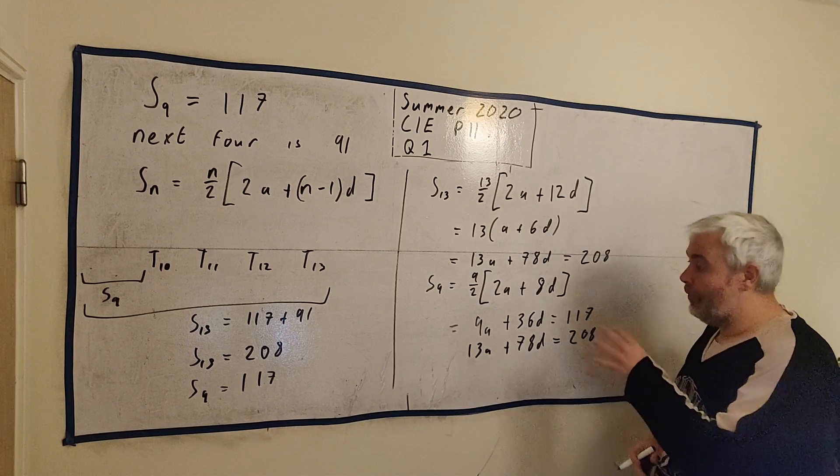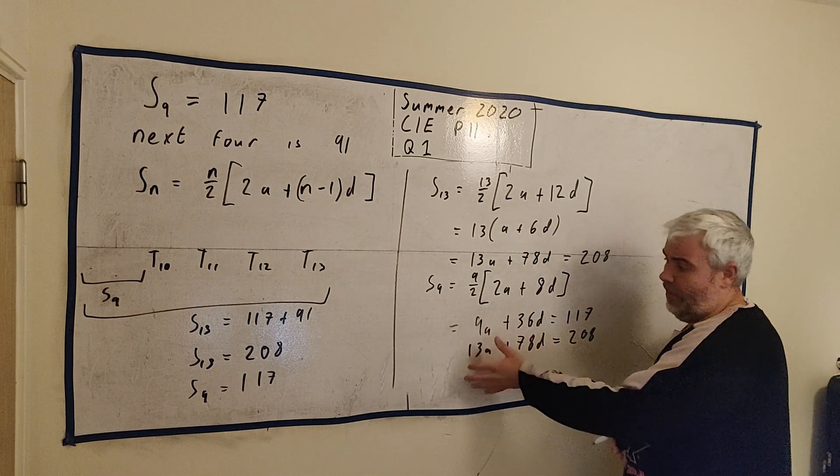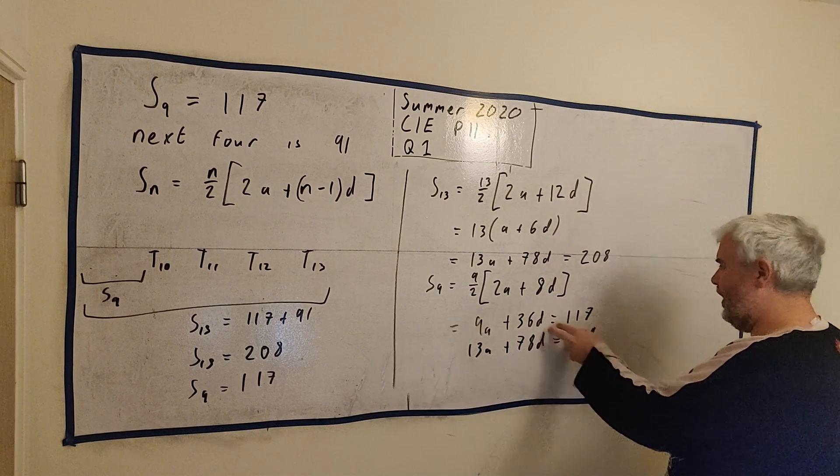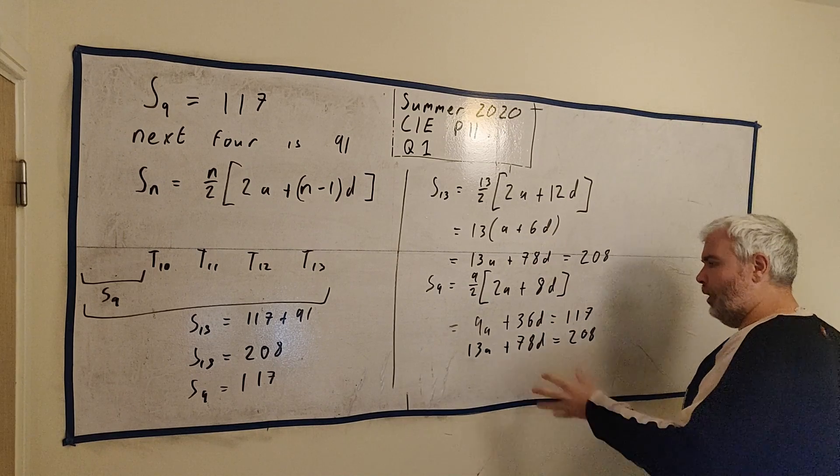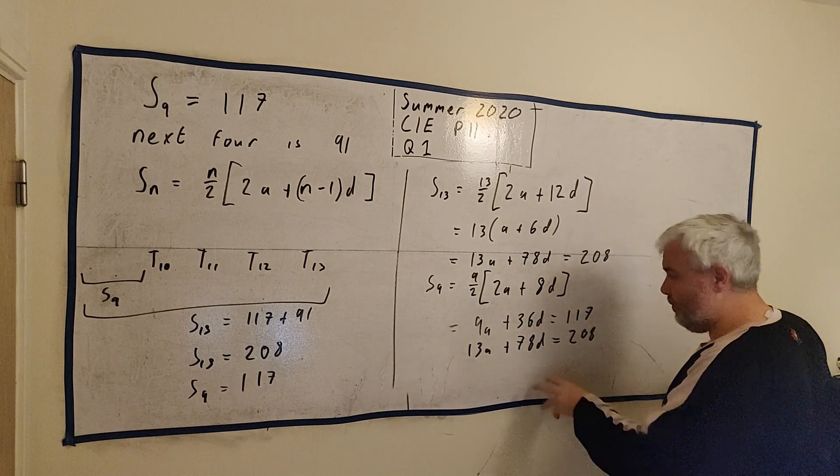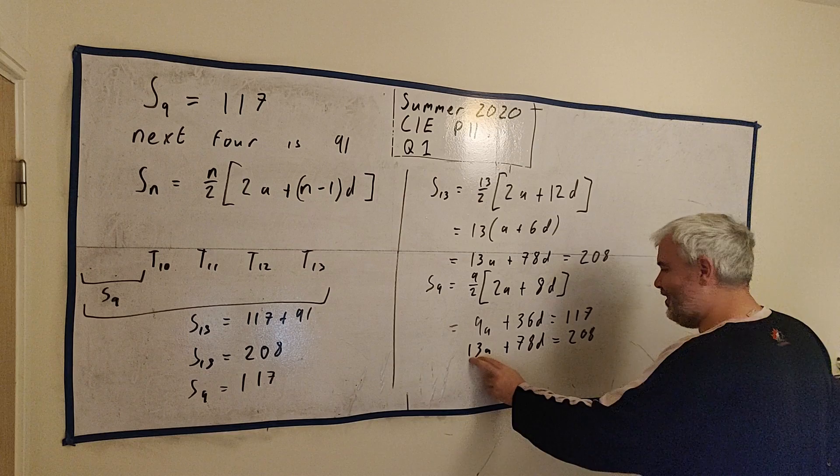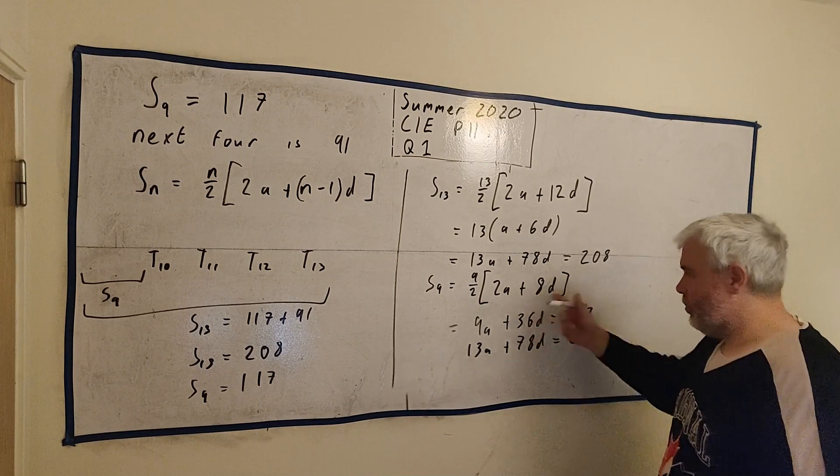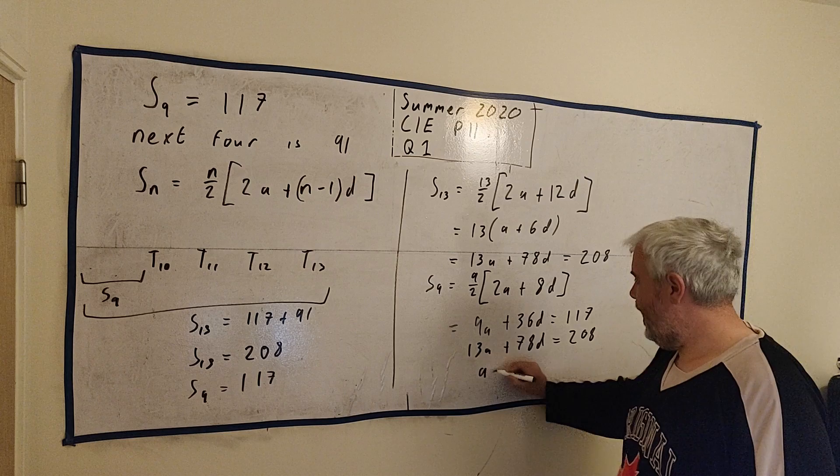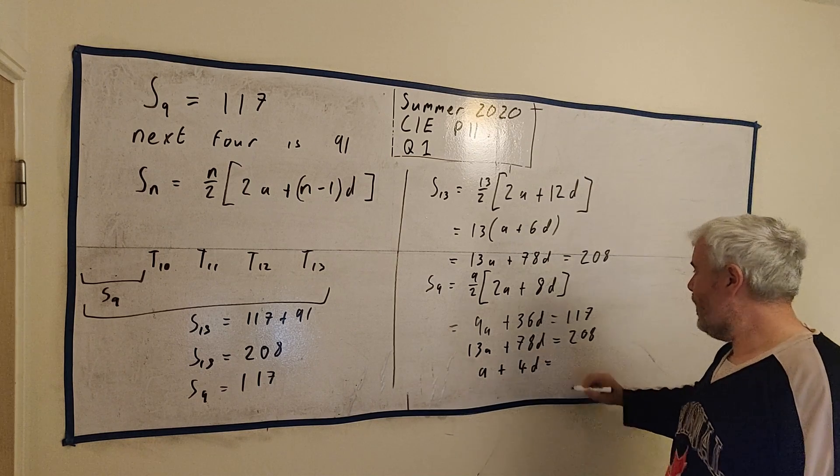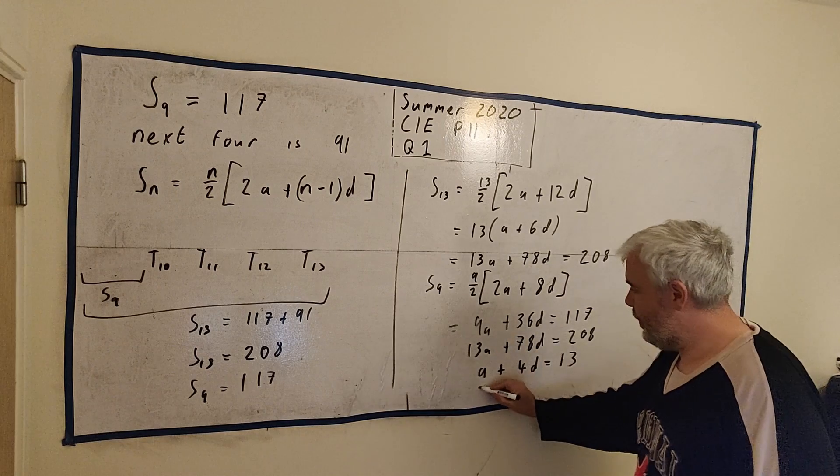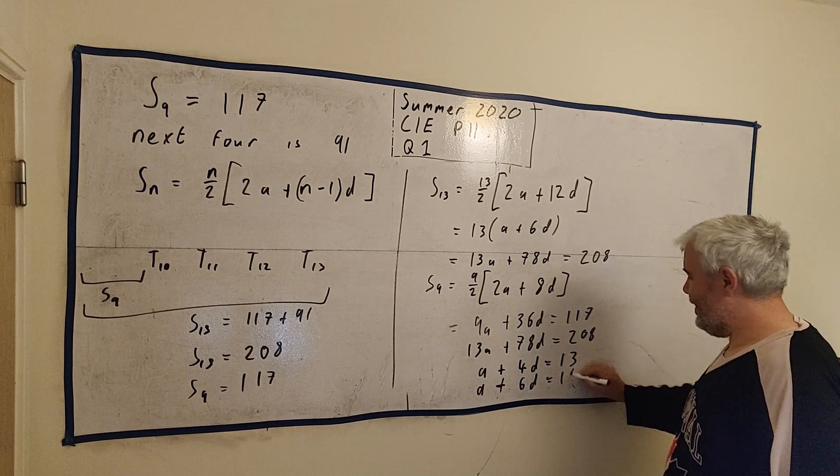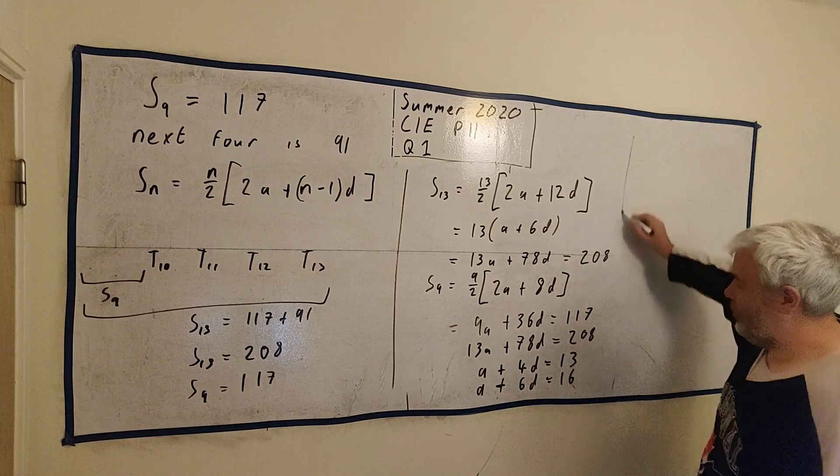13a plus 78d equals 208. This is a simple simultaneous equation. In fact, we can make it a little easier. At the top row, everything divides by 9. Bottom row, 13 goes into everything. 13 goes into this 6 times. And 13 goes into this 16 times. Top row will divide by 9. We get a plus 4d equals 13. And the bottom row divides by 13. a plus 6d equals 16.